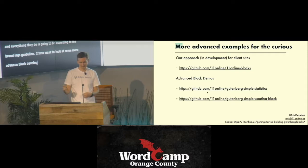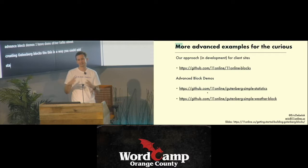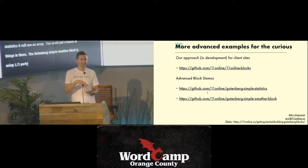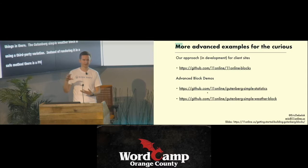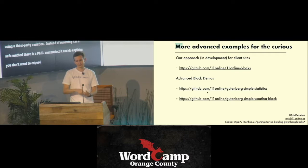For more advanced block demos, I've done other talks on creating advanced Gutenberg blocks — these are two repos. The simple statistics one lets you add a bunch of statistics using an inner array for flexible layout. The Gutenberg simple weather block uses a third-party API integration and, instead of rendering in the save method, renders in PHP through the plugin so you can protect API keys or anything you don't want to expose to front-end users.